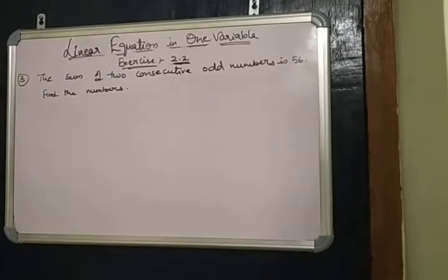Okay, the question is third question: the sum of two consecutive odd numbers is 56, find the numbers.